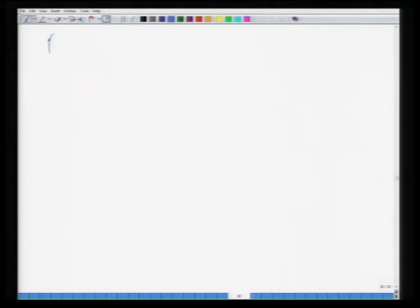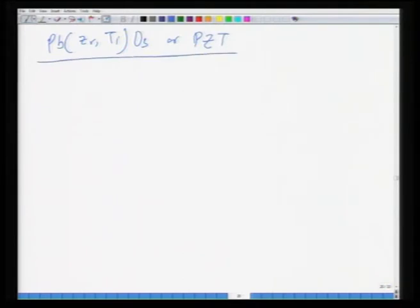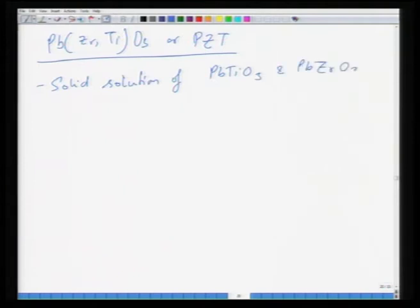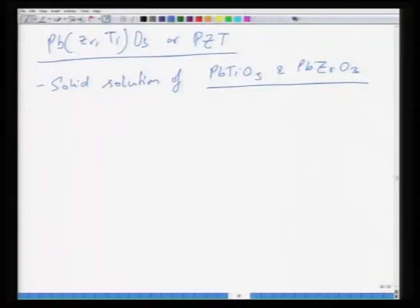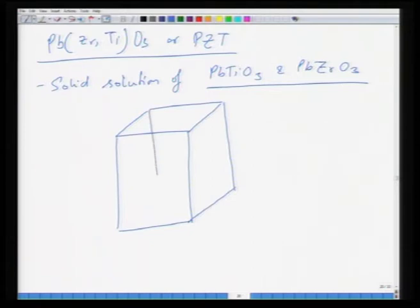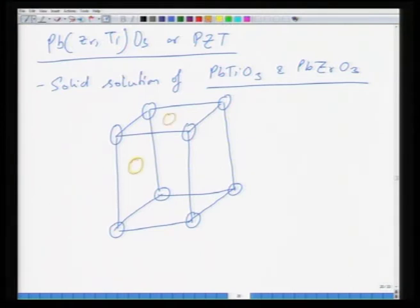The next material, which is actually more important, is lead zirconium oxide, often called PZT. It is a solid solution of lead titanate and lead zirconate, with a perovskite structure where the B-site is randomly occupied by either titanium or zirconium ions. Lead ions sit at the corners, oxygen ions at the face centers, and the central atom is titanium or zirconium.